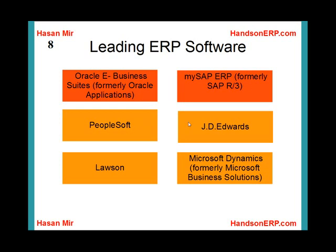PeopleSoft had already acquired JD Edwards before Oracle Corporation purchased PeopleSoft. Therefore, Oracle Corporation is now maintaining all three ERPs: Oracle E-Business Suite, PeopleSoft, and JD Edwards. Lawson is also a big player in the ERP market. Microsoft also makes an ERP software called Microsoft Dynamics — formerly known as Microsoft Business Solutions — but it is not very scalable and is used by small to medium-sized companies.